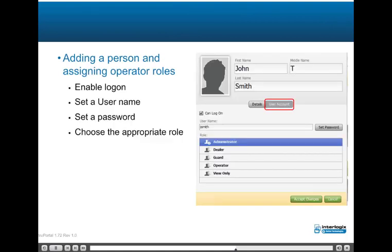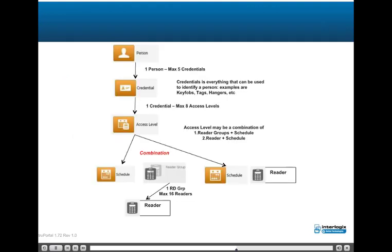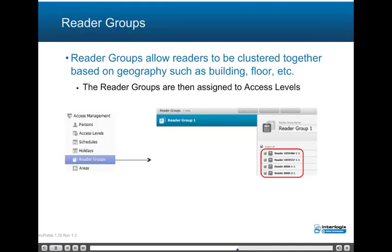Adding a person and creating a user account consists of enabling the user account (can log on), setting a user name, setting a password, and choosing the appropriate role which controls permissions. One person may have a maximum of five credentials. A credential is used to identify a person accessing a reader — examples include cards, key fobs, tags, and hangers. One credential may have a maximum of eight access levels; an access level may be a combination of a reader group and a schedule, or a reader and a schedule. Reader groups allow readers to be clustered together based on geography such as building, floor, etc., and the reader groups may then be assigned to access levels.